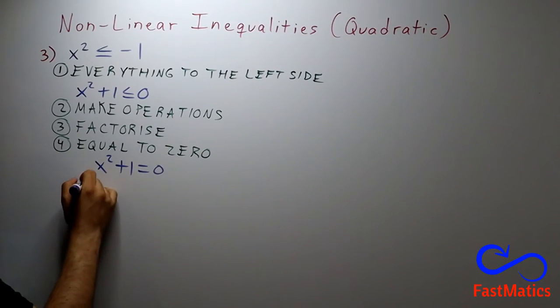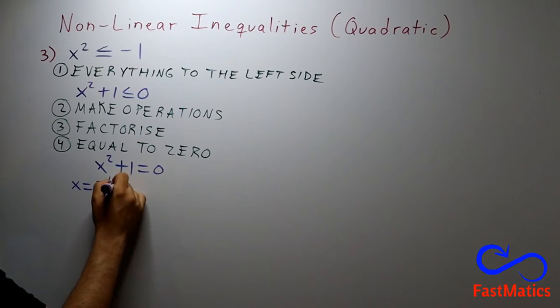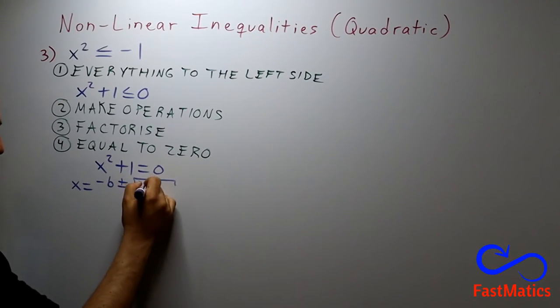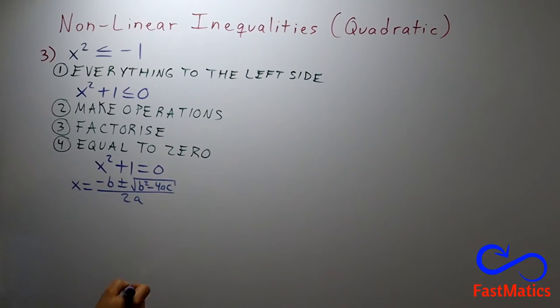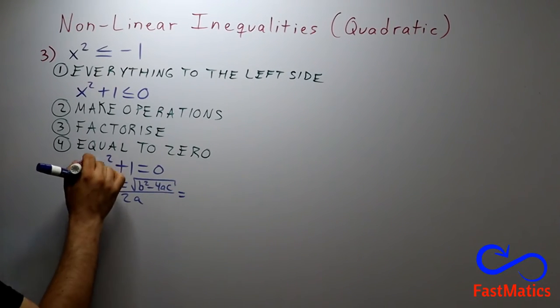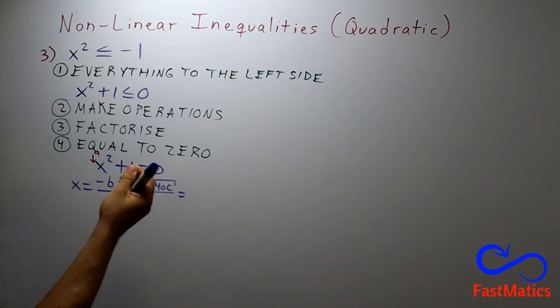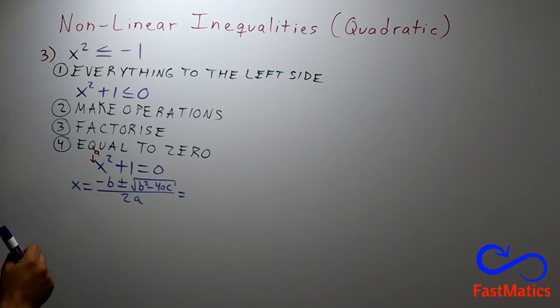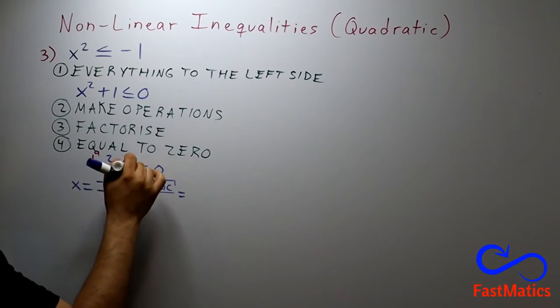So, here we are going to follow the quadratic formula. x is equal to negative b, positive negative, the square root of b squared, minus 4ac, and everything divided by 2a. Remember, please. The number, the coefficient of x squared is a. Okay. After that, the coefficient of x will be b. But here, we don't have x, so b will be zero.